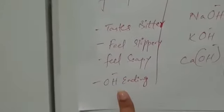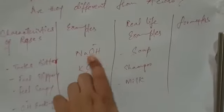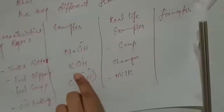For acids, we said they have hydrogen or H+ at the beginning. You can see HCl, HNO3, H2SO4 - these are examples of acids. But for bases, you can see the formula NaOH, KOH.